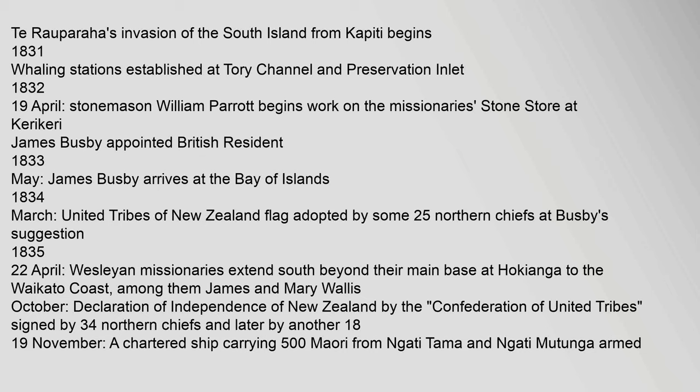1834, March: United Tribes of New Zealand flag adopted by some 25 northern chiefs at Busby's suggestion. 1835, 22 April: Wesleyan missionaries extend south beyond their main base at Hokianga to the Waikato coast, among them James and Mary Wallace. October: Declaration of independence of New Zealand by the Confederation of United Tribes, signed by 34 northern chiefs and later by another 18.